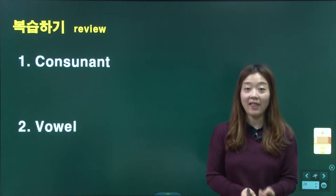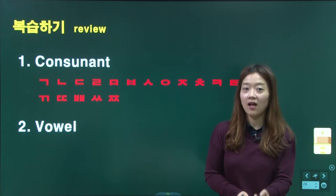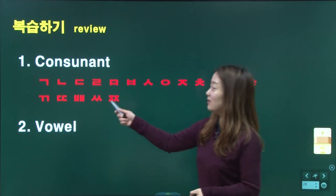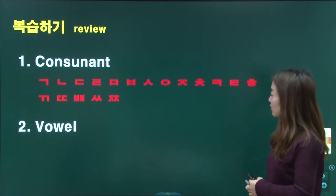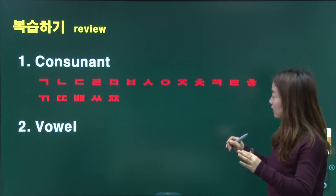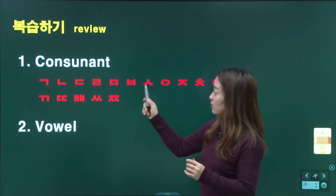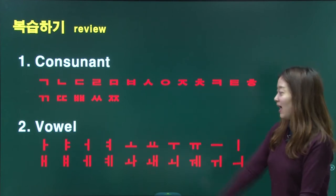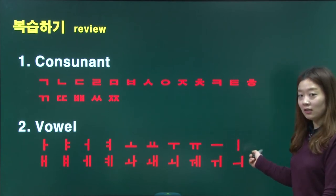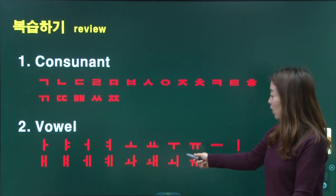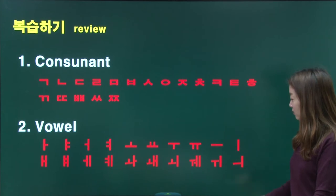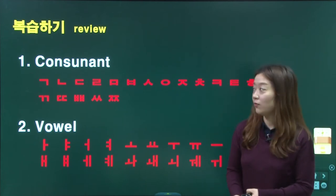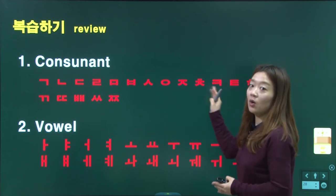Today we studied Korean consonants and vowels. Number one — the consonants. Do you remember how many consonants there are in Korean? There are so many! 1, 2, 3, 4, 5, 6, 7, 8, 9, 10, 11, 12, 13, 14, 15, 16, 17, 18 — 18 consonants. It's very confusing, that's a lot. And there are 20 vowels. So there are 18 consonants and 20 vowels.